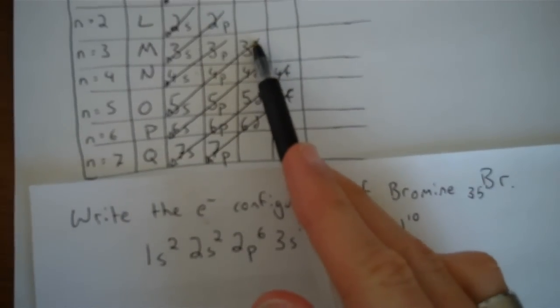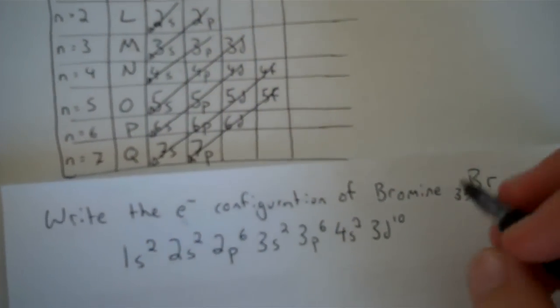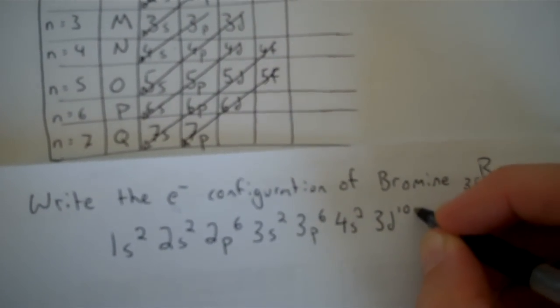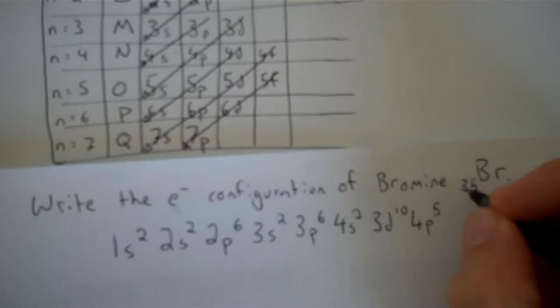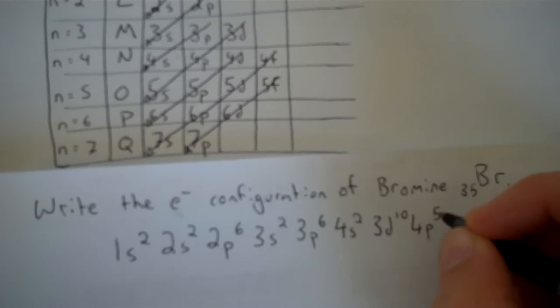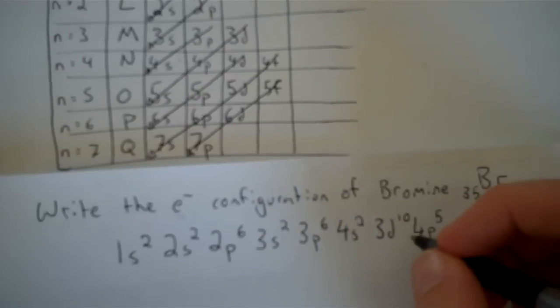What's after 3D? Follow my line—4P. So I'll do 4P5 to get to 35. Remember I can hold a maximum of six, so six or less for all the P subshells.